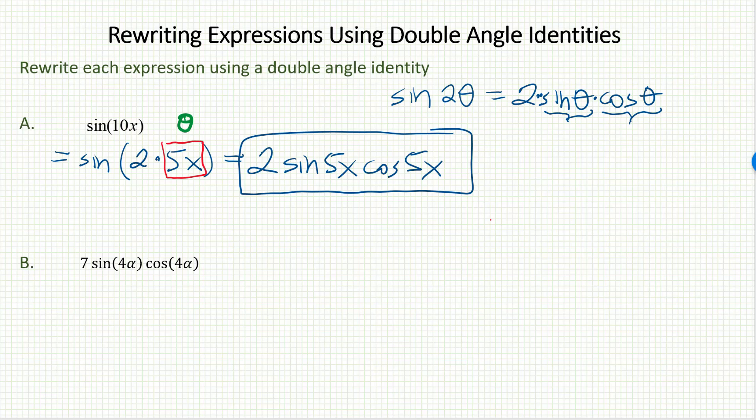Let's take a look at letter B. 7 sine 4α cosine 4α. Can I rewrite this using one of the double angle identities? When I look at this, what I'm supposed to notice is this looks an awful lot like the right side of the sine double angle identity.